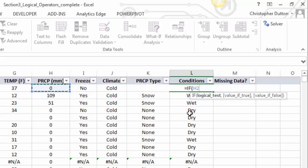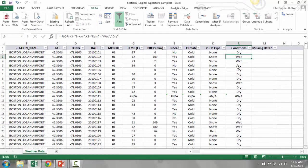I'm going to type equals IF, and then arrow over to precipitation. So if that's not equal to 0, my value of true is going to be wet, so something's fallen out of the sky. Otherwise conditions are dry, one parenthesis to close it, and there you go.